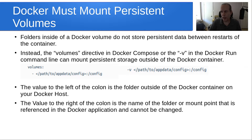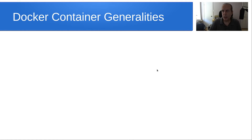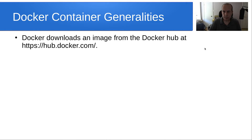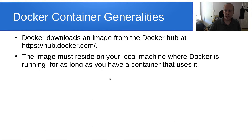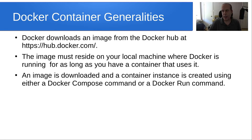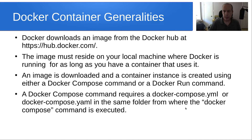The value to the right of the colon is the name of the folder or mount point referenced inside the Docker container, and it cannot be changed. Docker downloads an image from Docker Hub at https://hub.docker.com. The image must reside on your local machine for as long as you have a container using it. An image is downloaded and a container instance is created using either the Docker Compose command or the Docker run command. Docker Compose requires a docker-compose.yaml or docker compose.yaml file in the same folder where the command is executed.